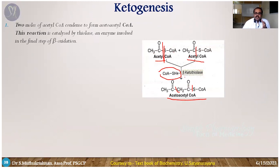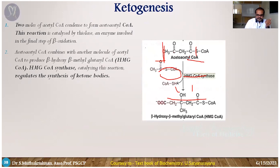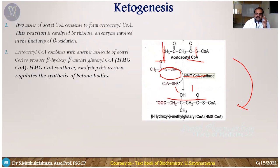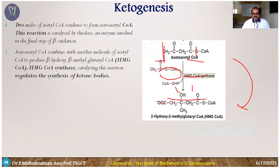In the second step, acetoacetyl-CoA is converted into HMG-CoA. This reaction is catalyzed by HMG-CoA synthase enzyme. An acetyl group is added to acetoacetyl-CoA to produce HMG-CoA. Note that HMG-CoA is also an intermediate in cholesterol biosynthesis — from this intermediate, cholesterol can be synthesized, which will be covered in detail in that unit.